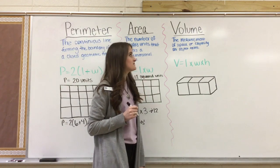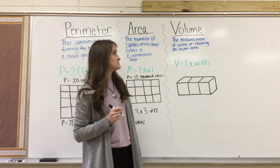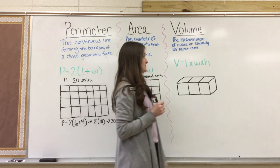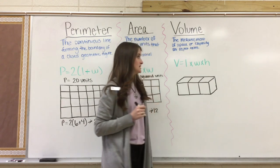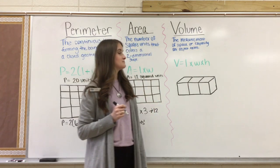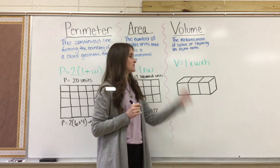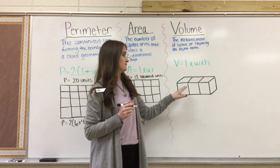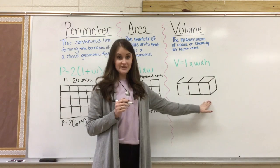Now volume. Volume is defined as the measurement of space or capacity an object takes. The formula for volume is V equals length times width times height. We're going to take that formula and use it to find the volume of this three-dimensional shape.